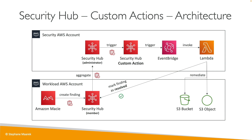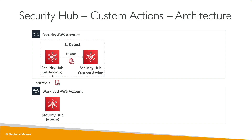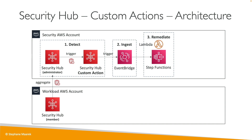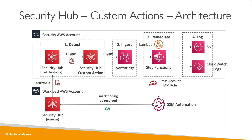More generally, the architecture involves a workload account and a security account. Events are aggregated through a detection phase using Security Hub and custom actions, an ingestion phase where events flow into Amazon EventBridge, and a remediation phase where Lambda functions or Step Functions workflows are triggered. SSM Automations can then mark findings as resolved in Security Hub. Finally, you need to log these actions — SNS or CloudWatch Logs are great locations for that. The key phases to remember are: detect, ingest, remediate, and log.